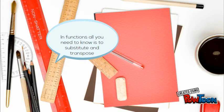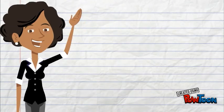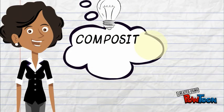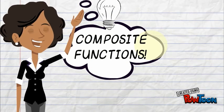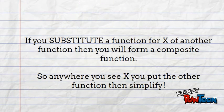Now, about composite functions: if we substitute a function for x in another function, we form a composite function. So anywhere you see x, you put the other function, then simplify.